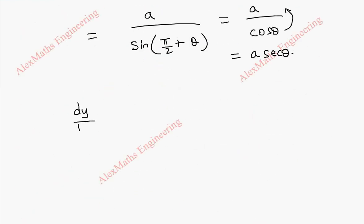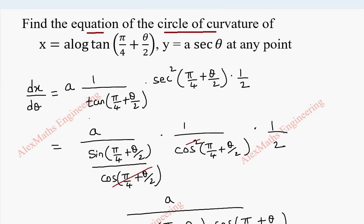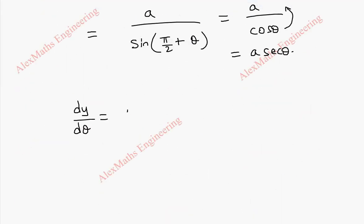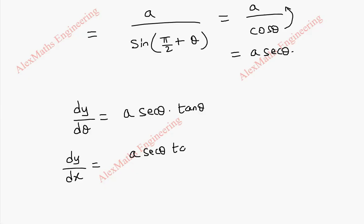Now for dy/dθ: y is a secant θ, and its differentiation gives a into secant θ tan θ. From this, we can find dy/dx, which is a secant θ tan θ divided by a secant θ. After cancelling, we are left with tan θ.